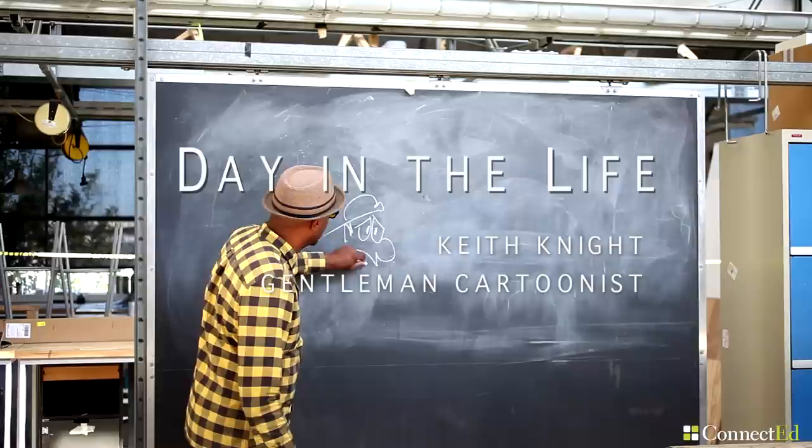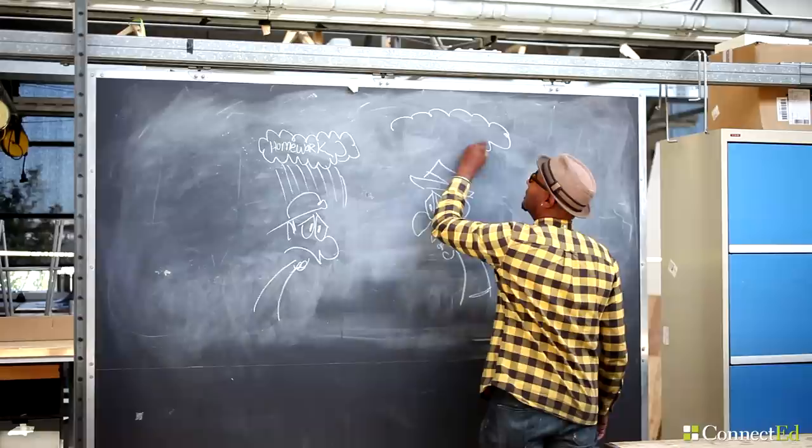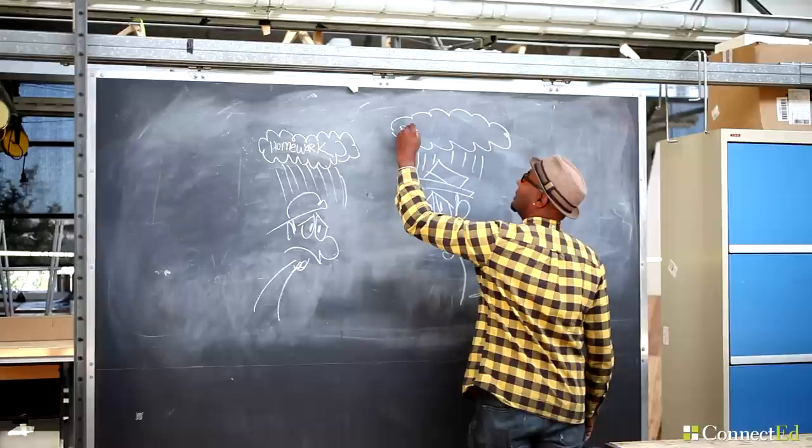My name is Keith Knight and I am a gentleman cartoonist. I had always drawn as a little kid. I drew on walls and then I drew in class and I never got in trouble for it. In fact, I kept on getting higher grades because I would include drawings in my English papers and history papers.